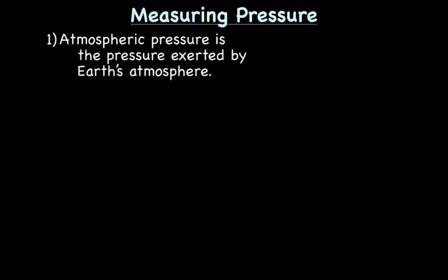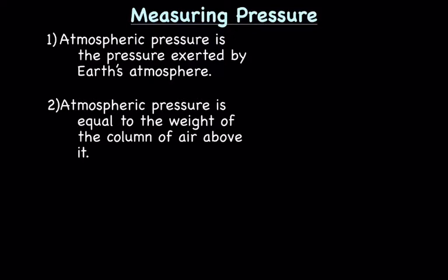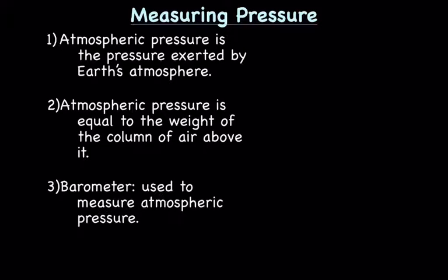So how is pressure measured? Something we need to know how to do. For example, you know how to measure temperature, right? You use a thermometer. You know how to measure volume, you use a graduated cylinder. You know how to measure mass, you use a balance. But how do you measure pressure? So let's start with atmospheric pressure. So the definition of atmospheric pressure, it's the pressure exerted by Earth's atmosphere. Atmospheric pressure is equal to the weight of the column of air above it. And we use something called a barometer to measure atmospheric pressure.